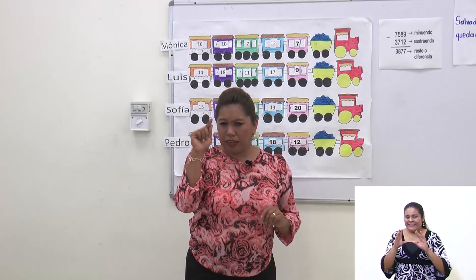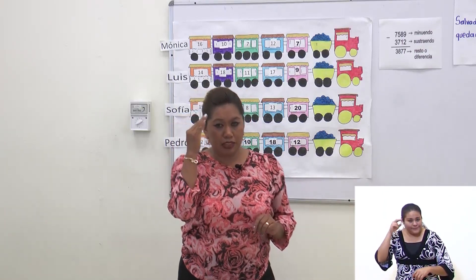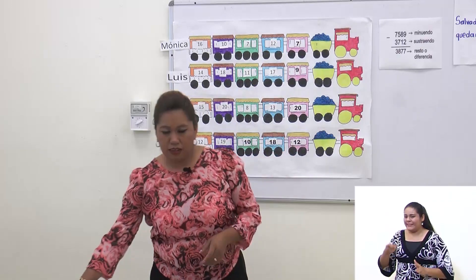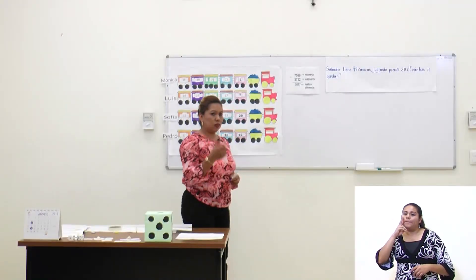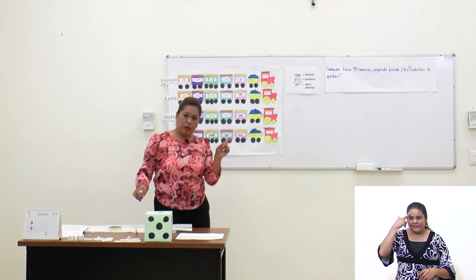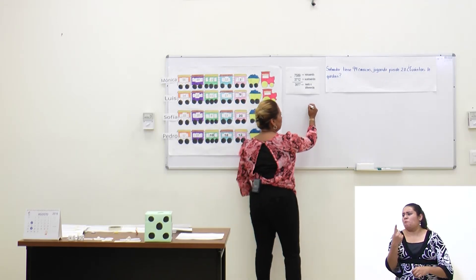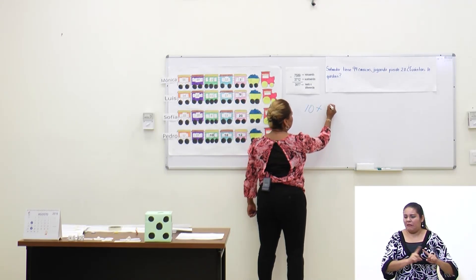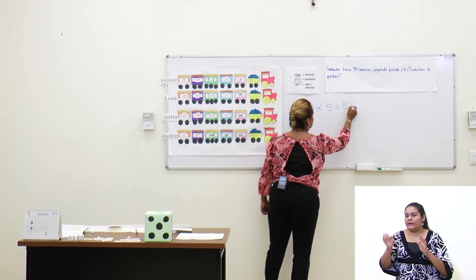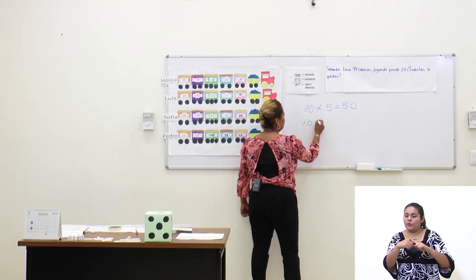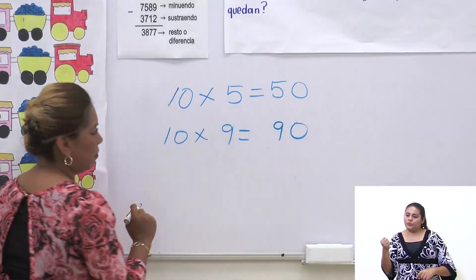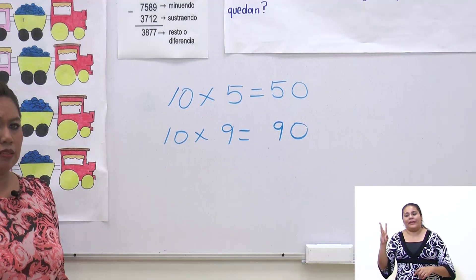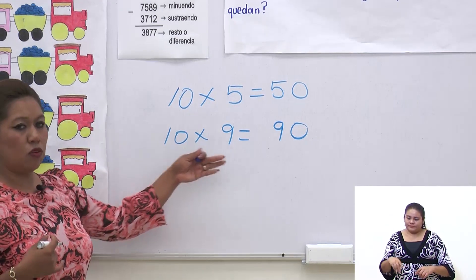Vamos a hacer un pequeño recordatorio para que tengas frescos todos tus conocimientos. En la clase anterior estuvimos viendo los múltiplos de 10, los cuales se obtenían al multiplicar cualquier número que tú conozcas por 10. Por ejemplo, 10 por 5 nos da 50, y 10 por 9 nos da 90. Y así sucesivamente puedes ir obteniendo múltiplos de 10.